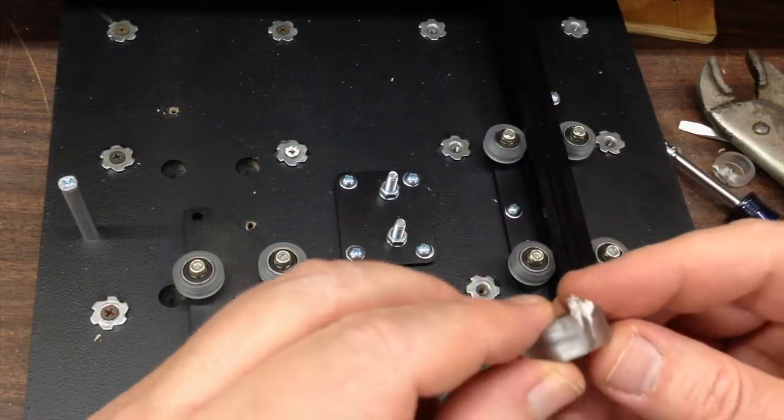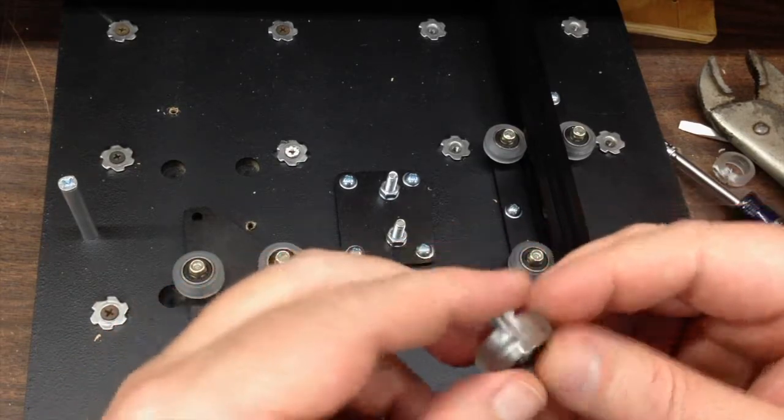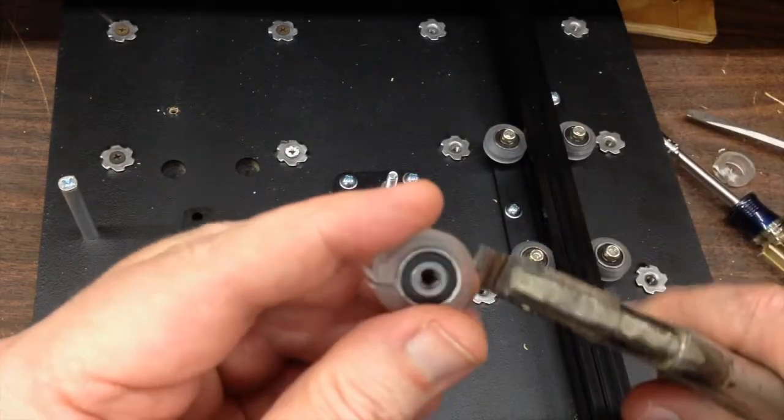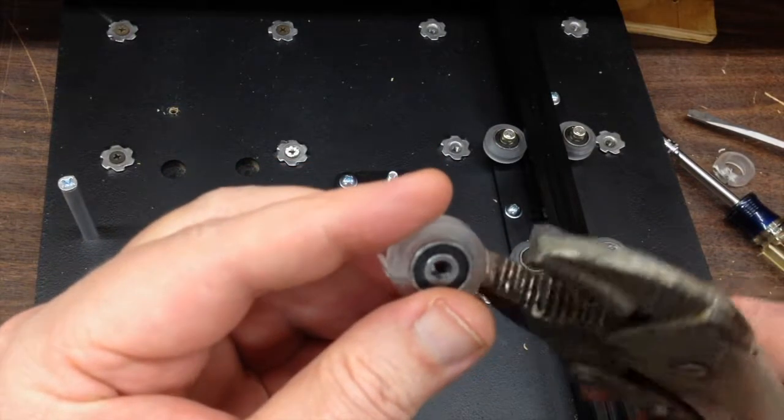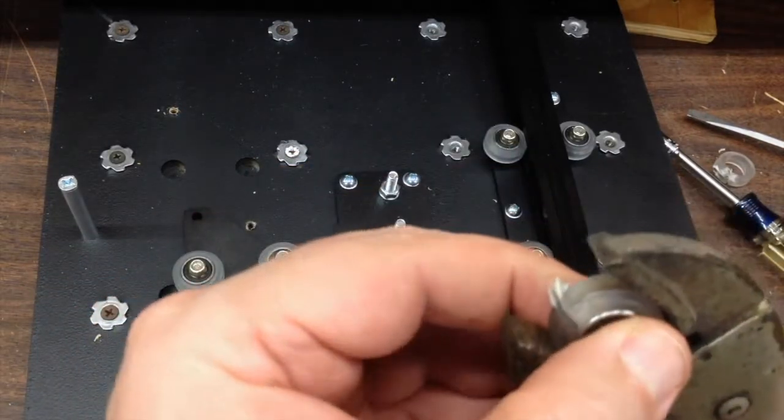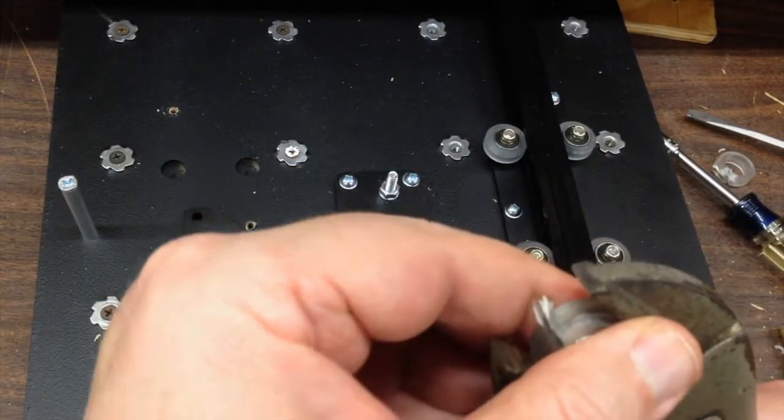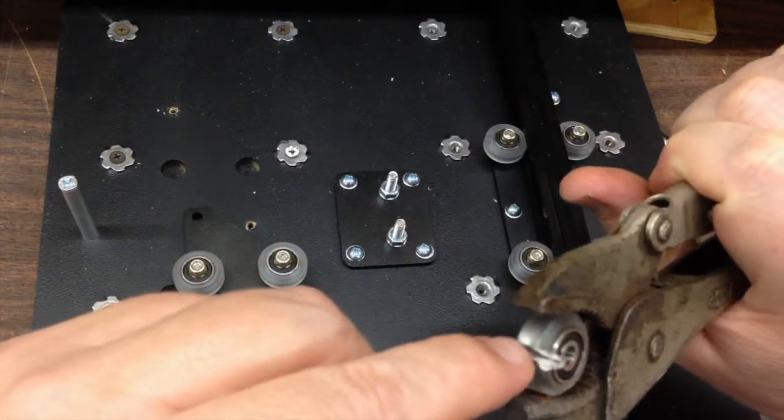For this last one I couldn't recreate the happy accident, so I decided on this last one to instead of trying to clamp it from this side, which is very precarious, I decided to clamp it like this, which I did, and then come in with the Dremel just straight on this way.